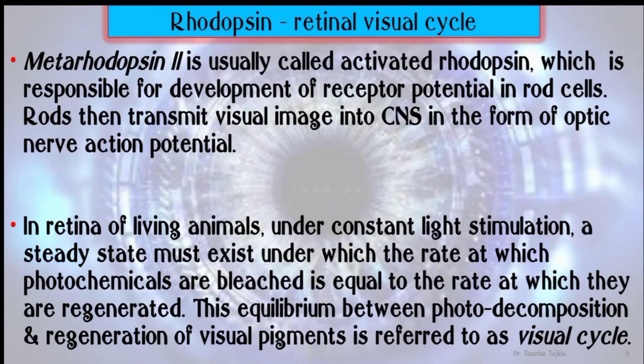Metarhodopsin II is usually called activated rhodopsin, which is responsible for the development of receptor potential in the rod cell. The rod then transmits the visual image into the central nervous system in the form of optic nerve action potentials. This occurs in the retina of living animals under constant light stimulation.